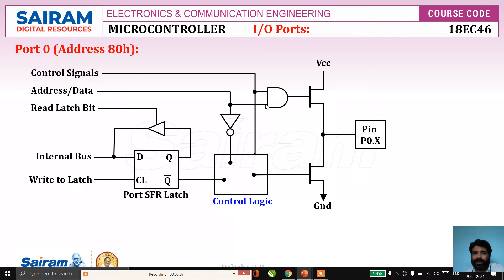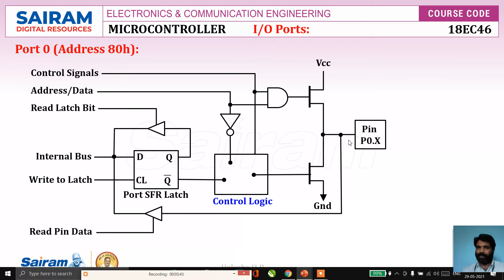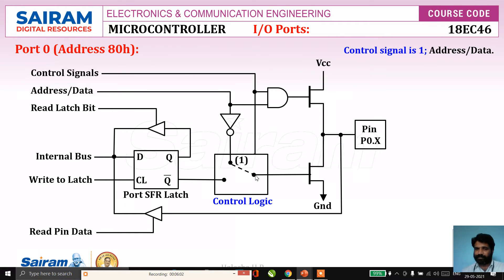The address/data pin and control signal are connected to an AND gate, whose output drives the gate of the upper FET. To read the pin, a separate buffer is used — its input is the port pin and output goes to the internal bus, controlled by the read-pin signal. When the read-pin signal is one, the connection between the internal bus and the port pin is established. When the control signal is one, the pin appears as address/data, driven by the AND gate output.